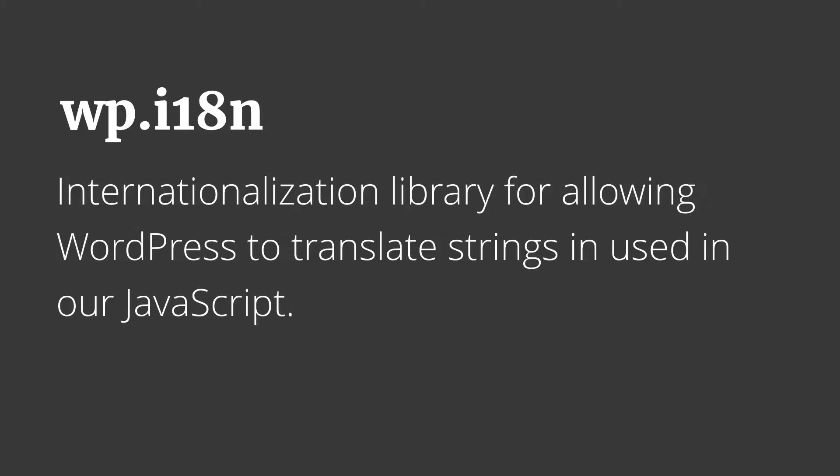Then we have wp-i18n, the internationalization library that allows WordPress to translate strings used in our JavaScript. So if you've built anything with PHP and WordPress before, hopefully you've already come across the double-underscore methods in all their variations. Now we have this on the client side, and we will use this everywhere we put in raw text into our JavaScript so that those strings can be translated using the normal translation method for WordPress plugins.